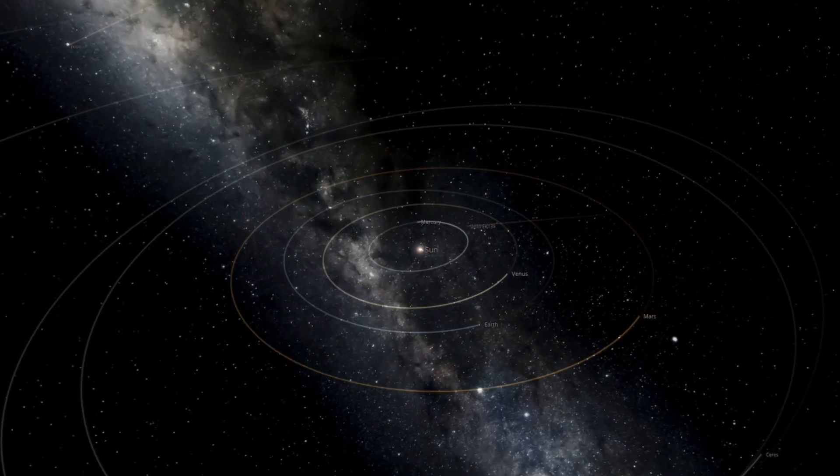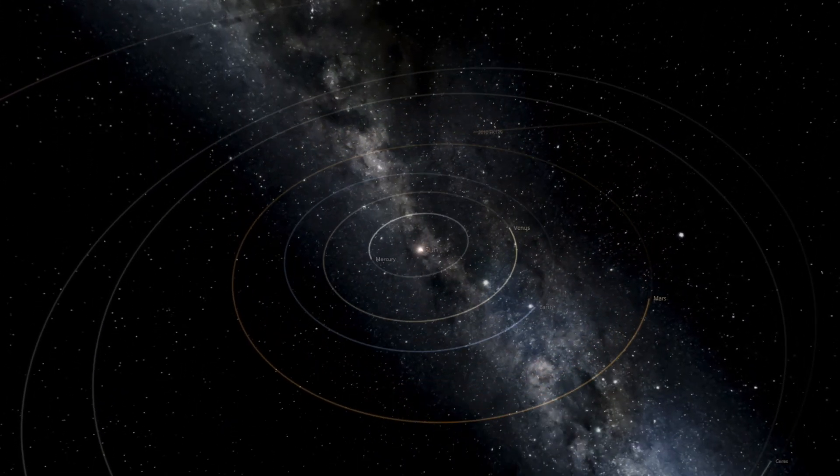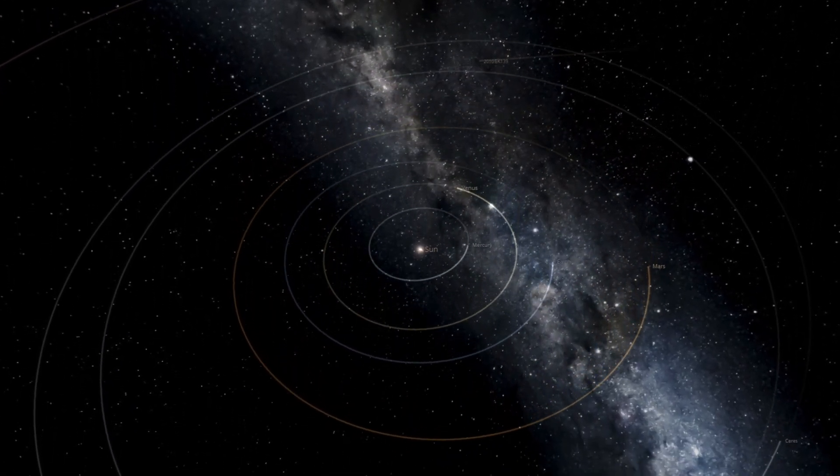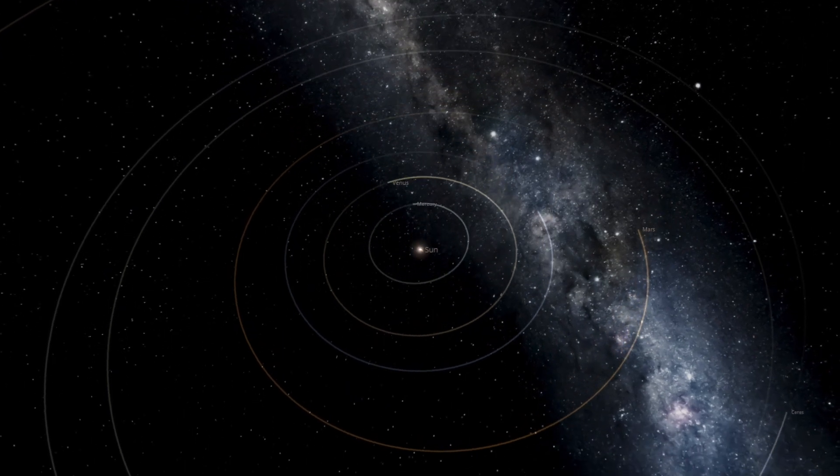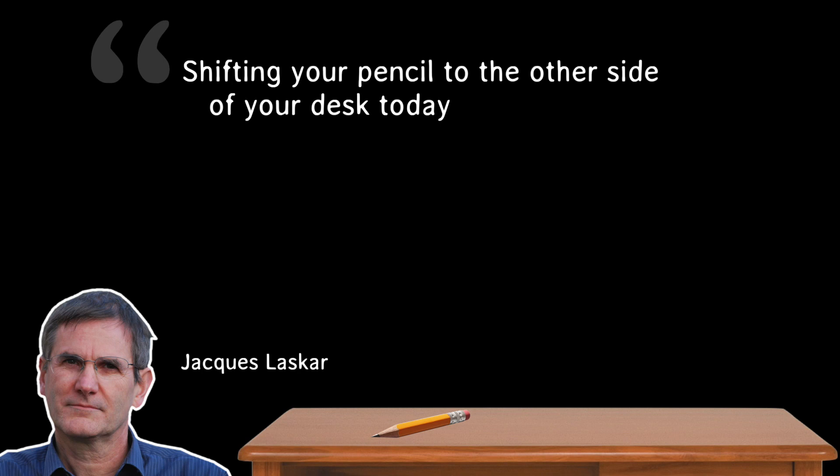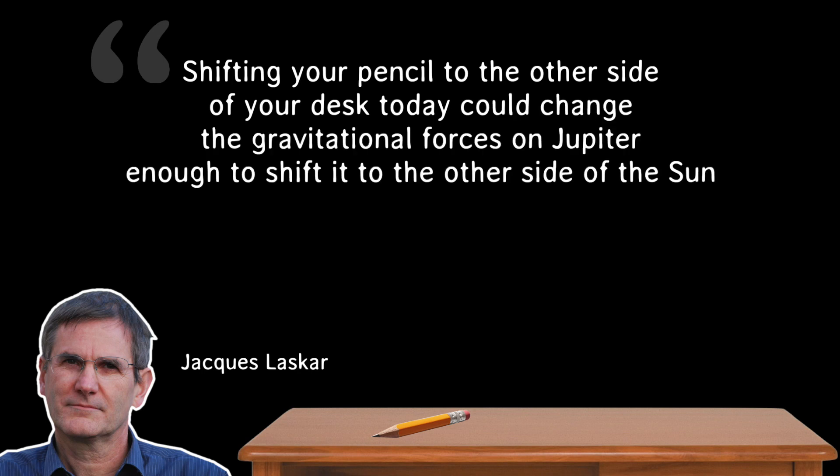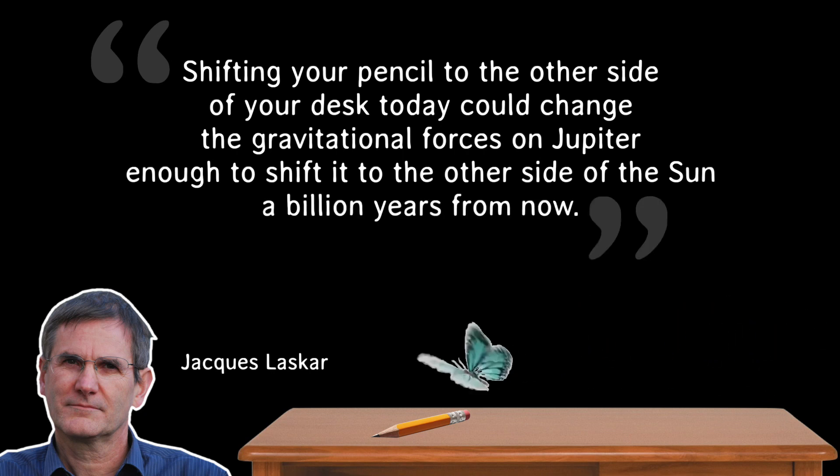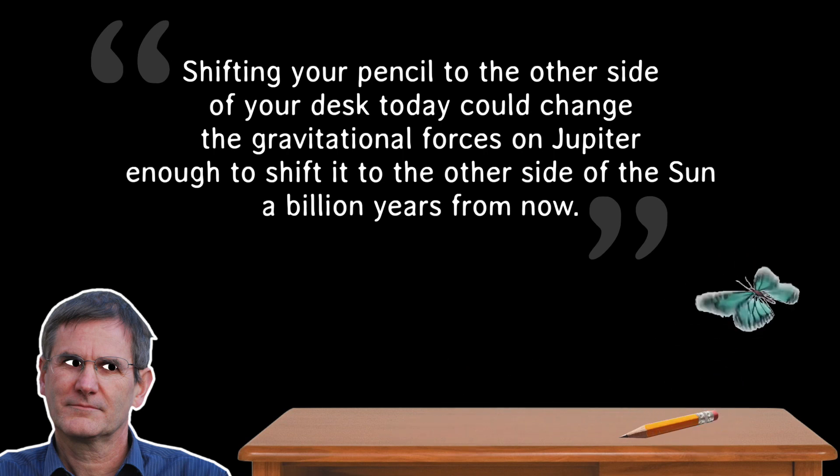And it's not just a problem with numerical simulations. Over these timescales, the solar system itself really is unstable. As Laskar put it, shifting your pencil to the other side of your desk today could change the gravitational forces on Jupiter enough to shift it to the other side of the Sun a billion years from now. The butterfly effect again, on a grand scale.